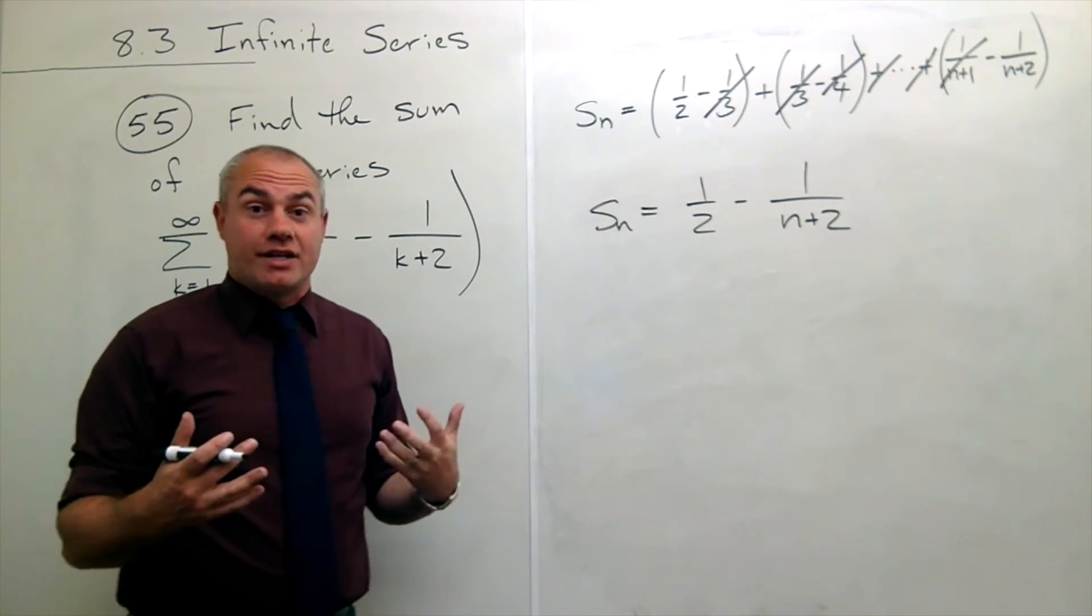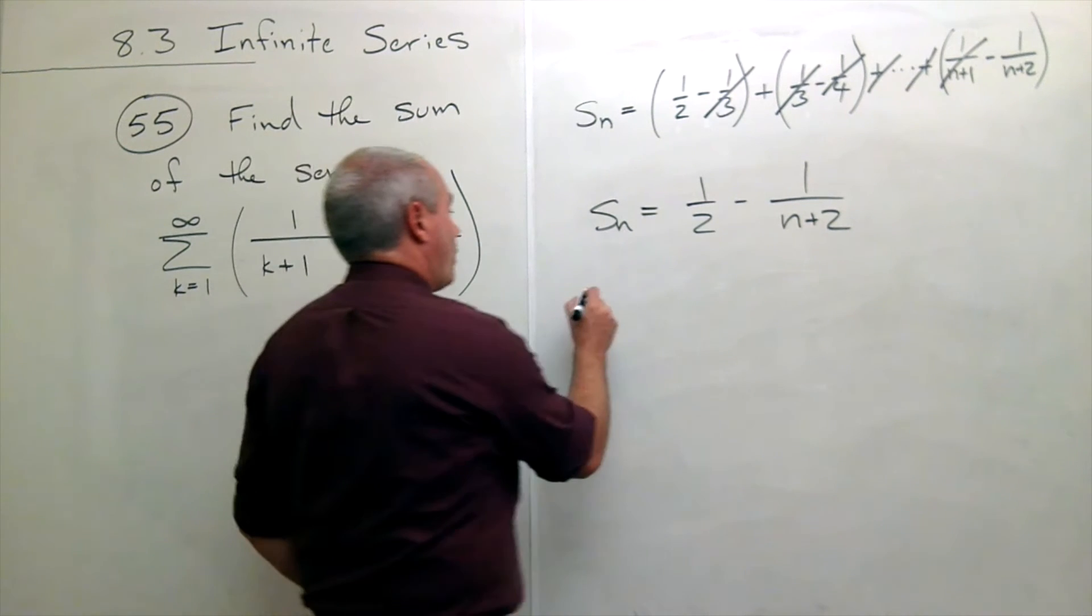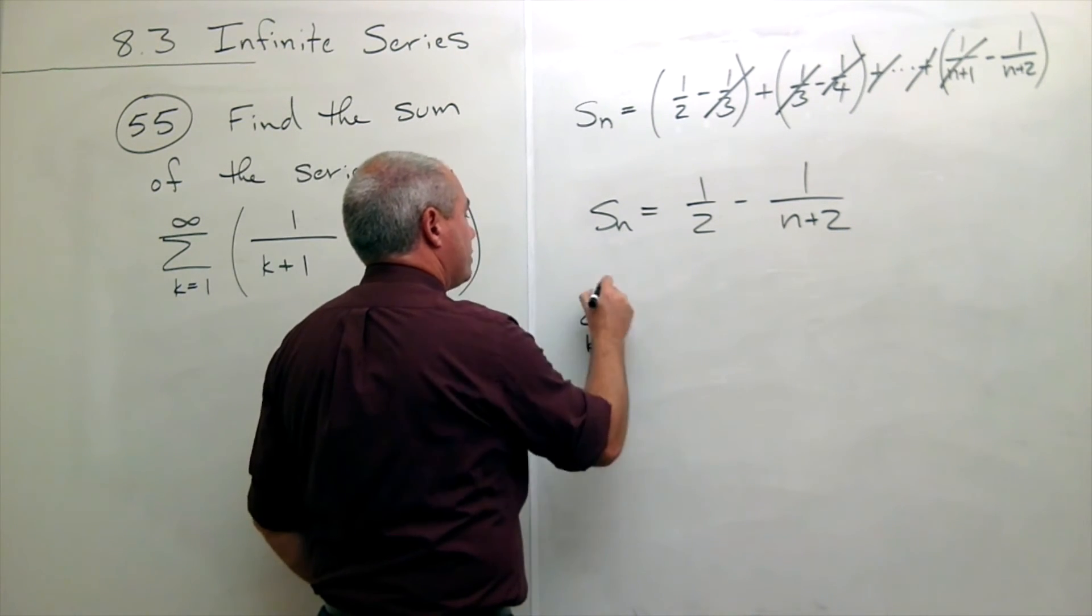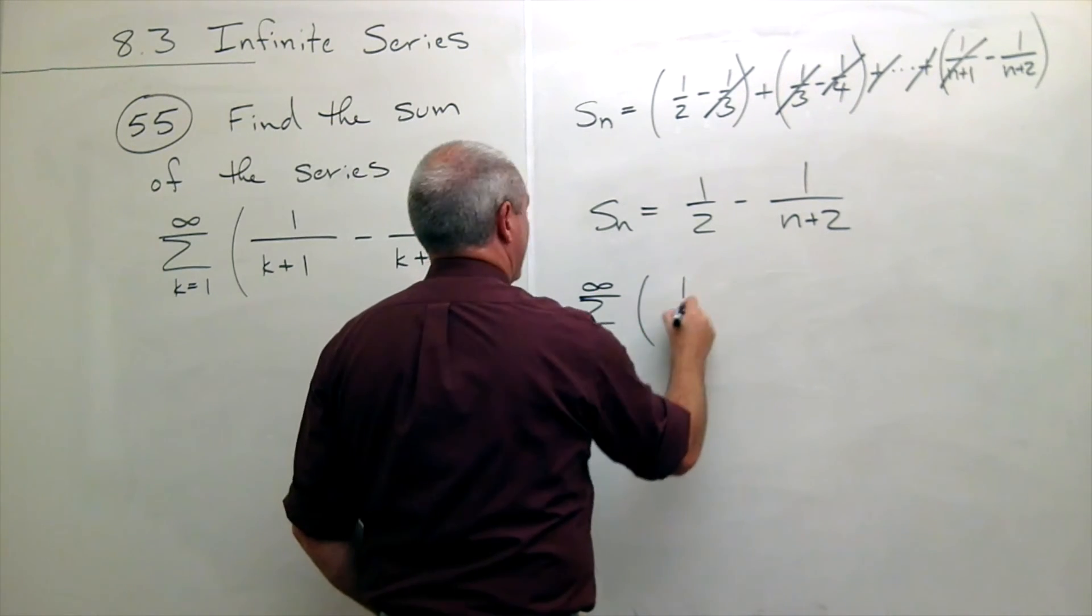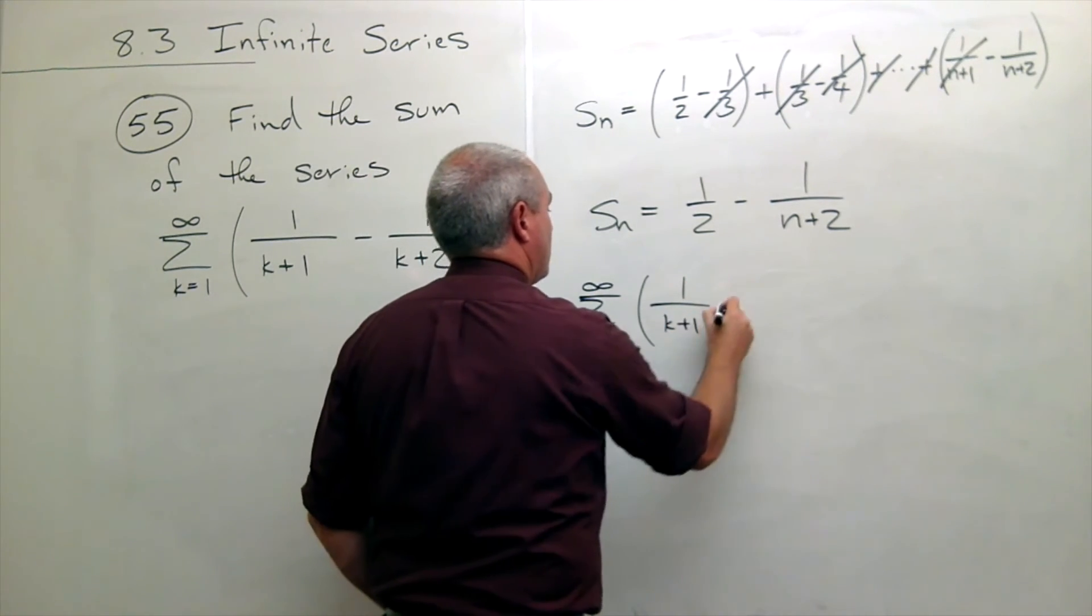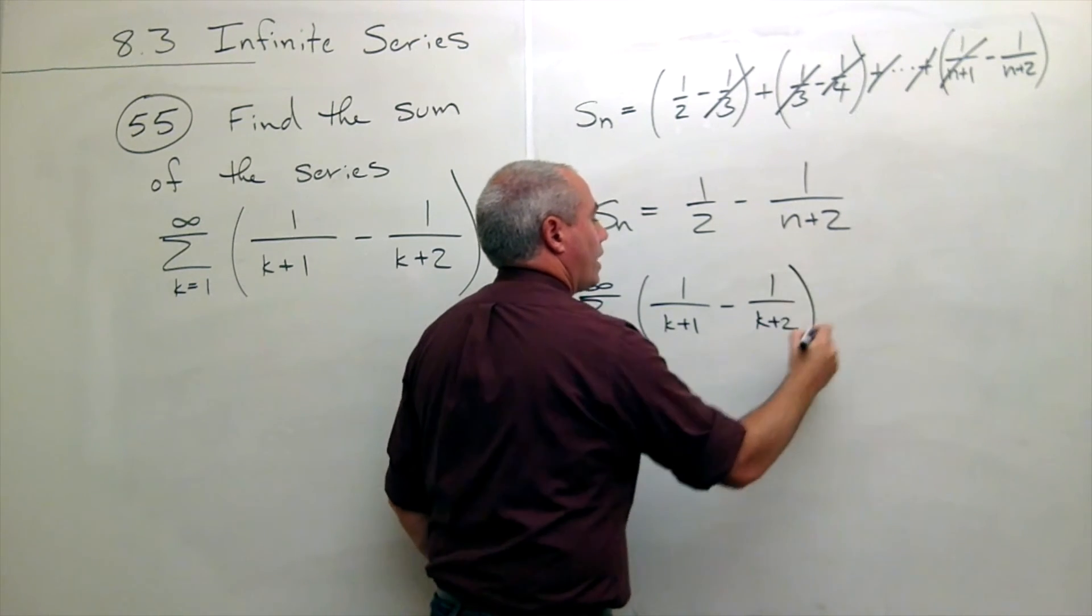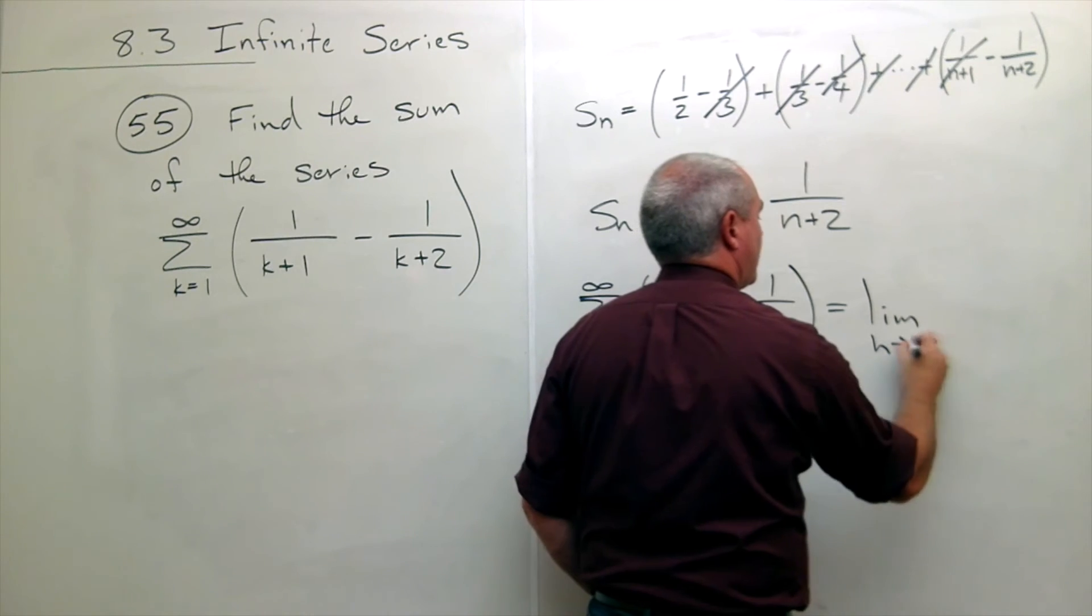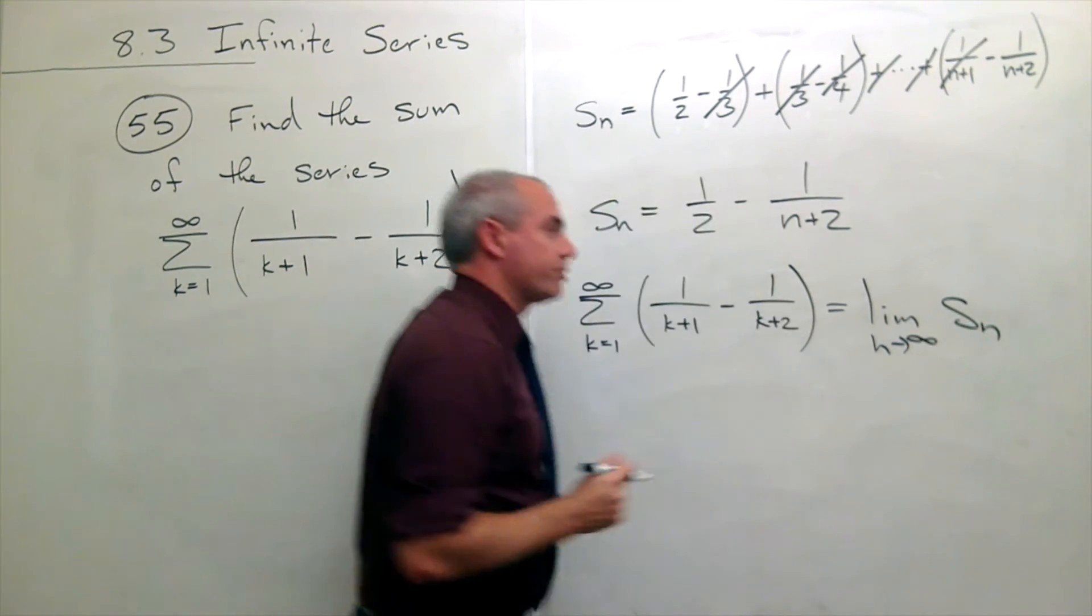Now if I want to add up the whole series, then what I do is I say, well if I want to sum up k going from 1 to infinity of 1 over k plus 1 minus 1 over k plus 2, then what I need to do is take the limit as n goes to infinity of the nth partial sum, or s sub n.